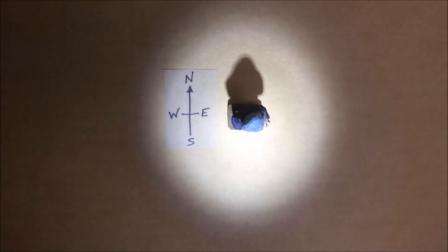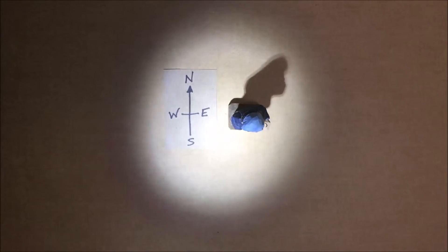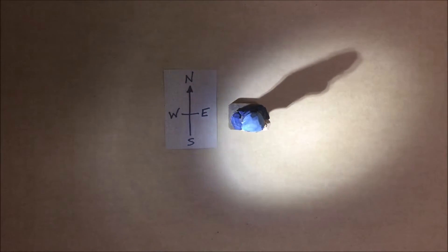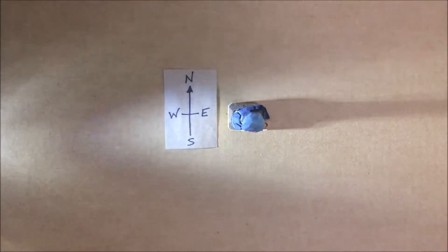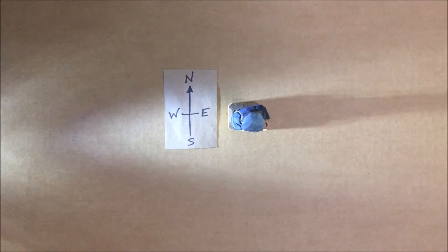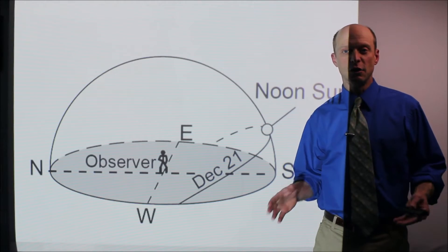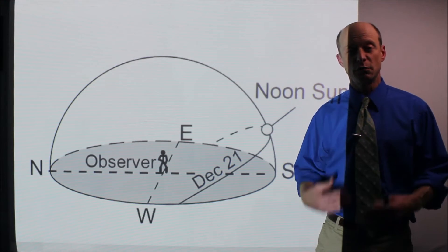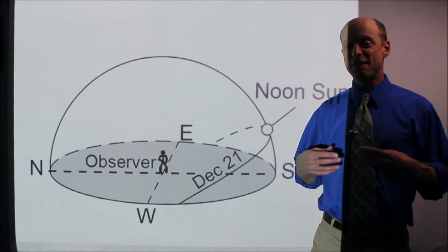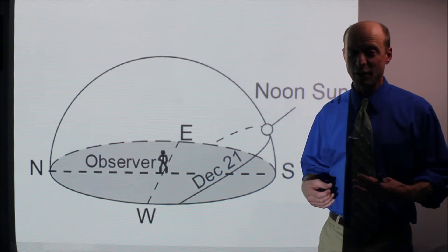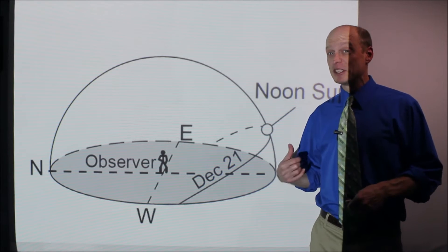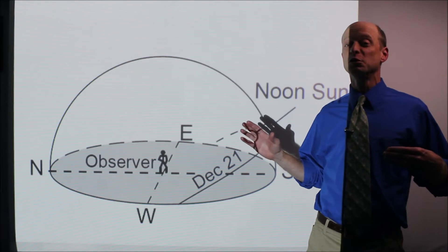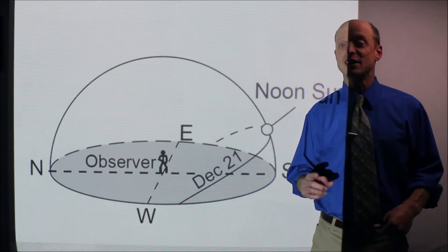Continuing past noon, the Sun starts to go down. The shadow gets longer and longer, and then we're basically at sunset. Those videos are pretty cool — I think they show it well. What I'm going to do now is show it in the real world. This is a video I filmed in my driveway in the summer of 2012, and it really shows how the Sun moves throughout a good chunk of the day.